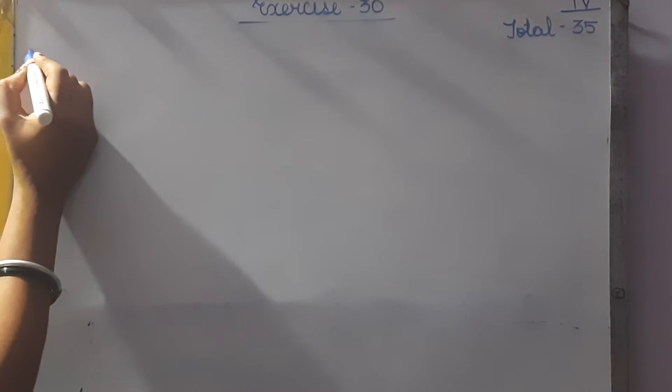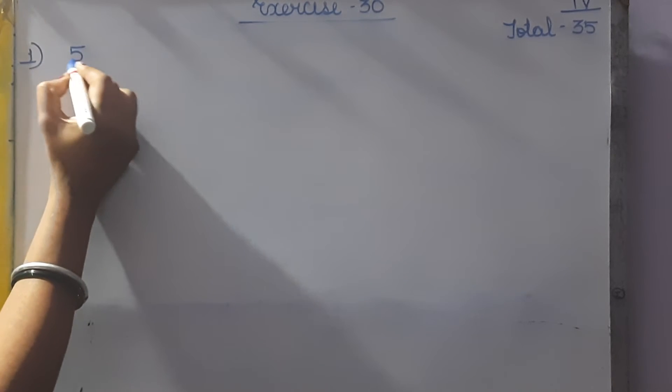There are many questions, so I am explaining two or three questions of each type. The rest of the questions will be in the notes — you can see them from there. And in our Zoom class, I am going to explain each and every question. Starting from the first question: divide and find the quotient.